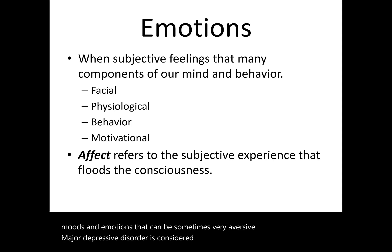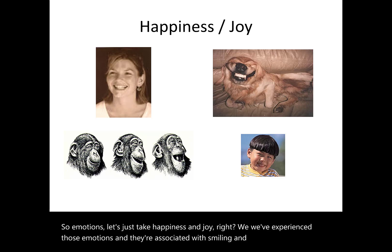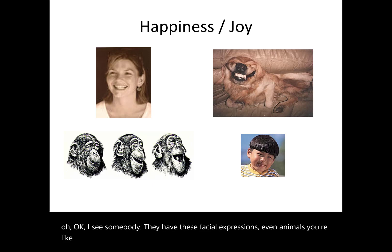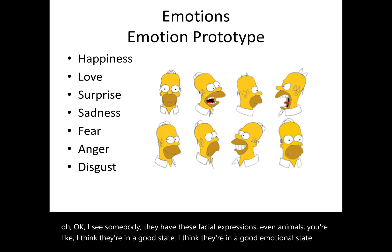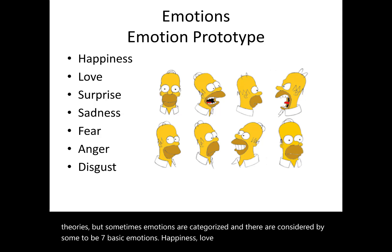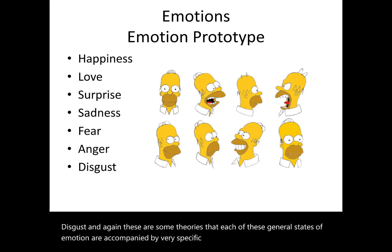Take happiness and joy — we've experienced those emotions and they're associated with smiling and changes in physiology. We can look at these emotions and observe facial expressions even in animals and sense they're in a good emotional state. Emotions are sometimes categorized, and some consider there to be seven basic emotions: happiness, love, surprise, sadness, fear, anger, and disgust. Each of these general emotional states is thought to be accompanied by very specific physiological or motivational states.